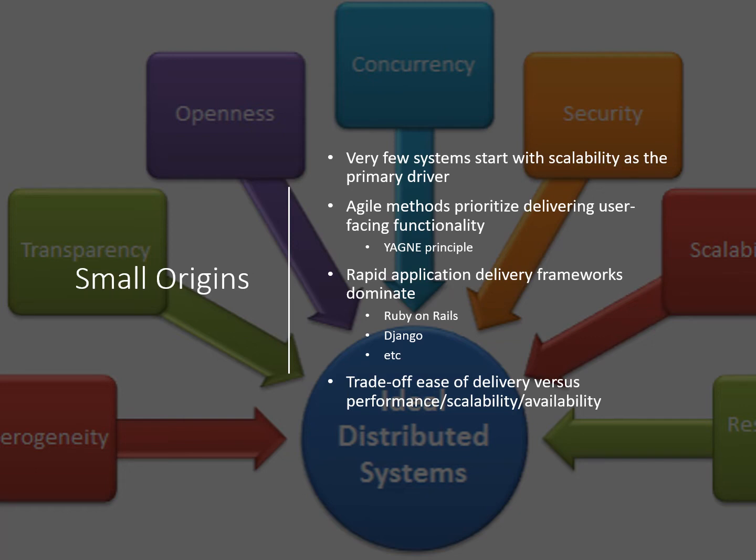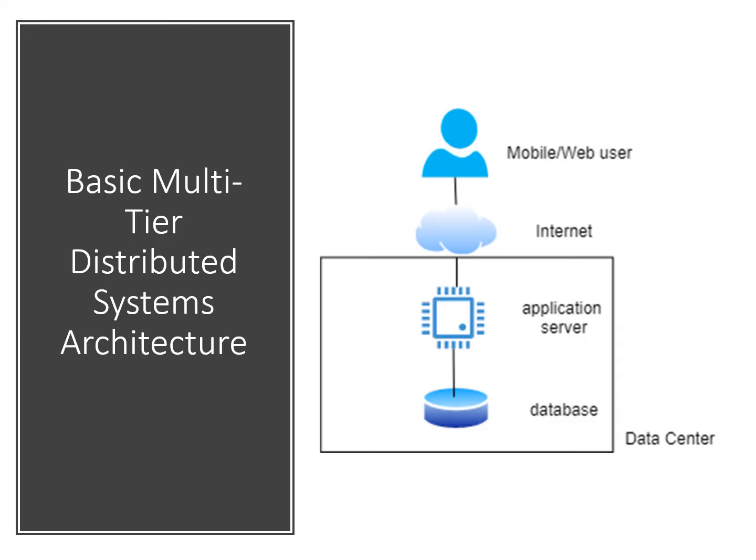These properties are only going to be useful if your system actually is successful and becomes heavily used. A typical simple software architecture for starter systems, which closely resembles what you get with rapid development frameworks, comprises a client tier, an application service tier, and a database tier.